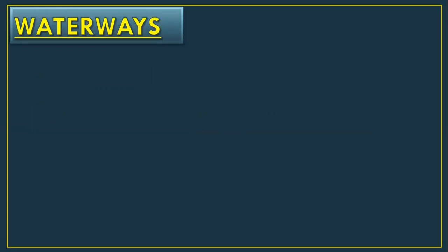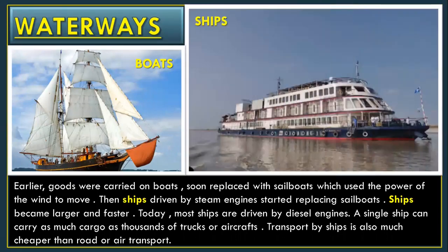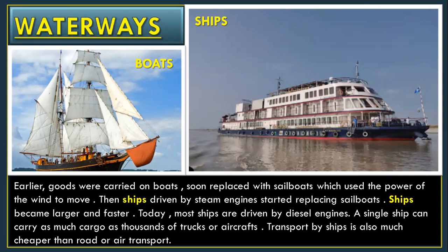Waterways. The early people made rafts to carry goods. Earlier, goods were carried on boards, soon replaced with sailboards which used the power of the wind to move. First people used rafts, then some time later they carried goods on boards, and then some time later they used sailboards which moved with wind.